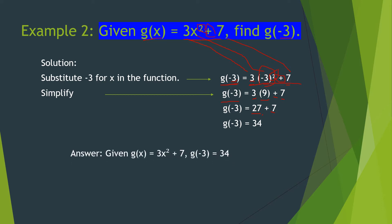For our answer: in the given function g of x is equal to 3x squared plus 7, when negative 3 is used as the value of x, we will get the value of 34. Therefore, this function has a value of 34 when x is equal to negative 3. Do you have any question on example number 2?